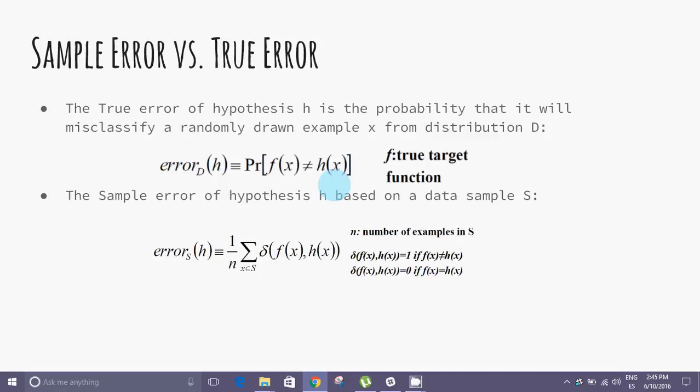Drawing an example from D does not influence the probability that another example will be drawn next. Examples are independent of the classifier hypothesis H we are testing.